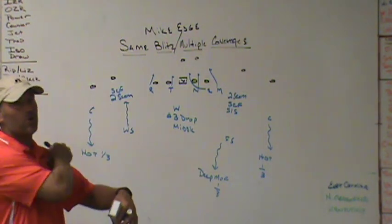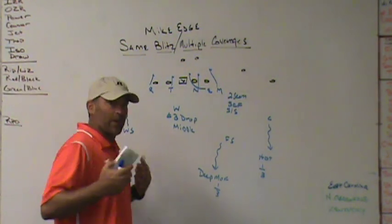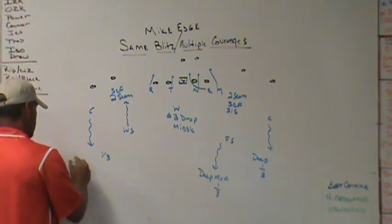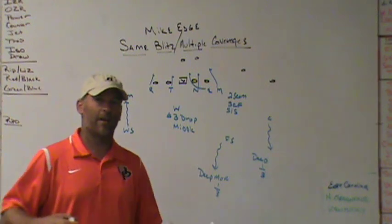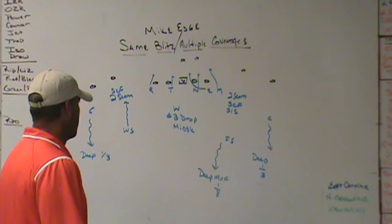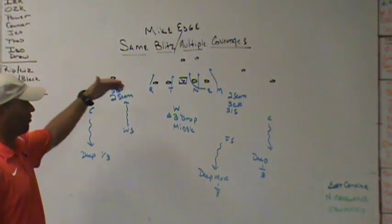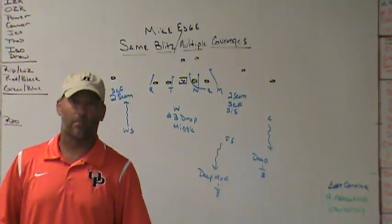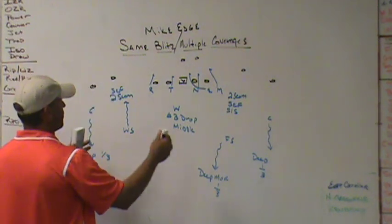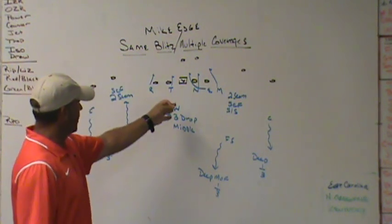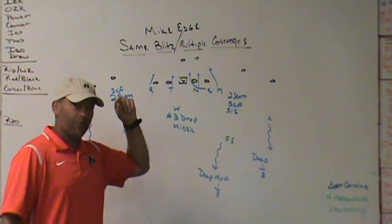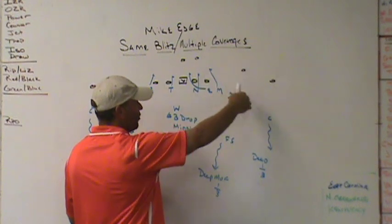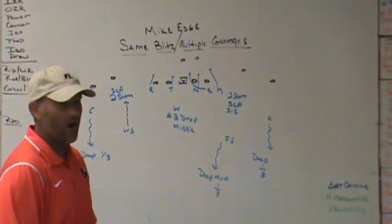We're going to tell the corner to play a regular deep third — not hot third. I want him playing a regular third, midpointing two verticals. I want the free safety to play a regular deep third as well. So it's three-under: two-seam/seam-curl-flat, middle-hole three-drop, and two-seam curl flat. Your two-seam players are most likely going to be your force players. You've created an eight-man front with three-under three-deep, two seams covered, and the Will dropping into the middle-hole three-drop.